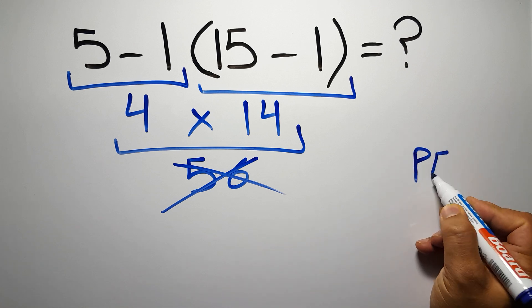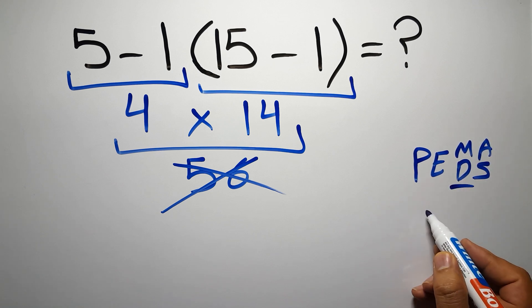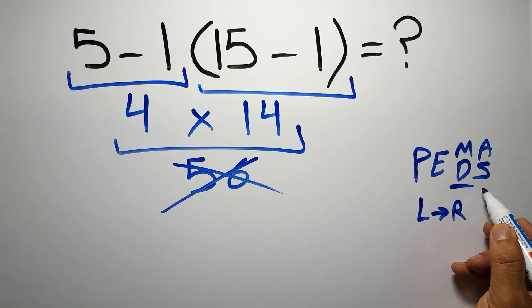Then exponents, then multiplication or division, and finally addition or subtraction. Remember that multiplication and division have equal priority and we have to work from left to right, and the same applies to addition and subtraction.